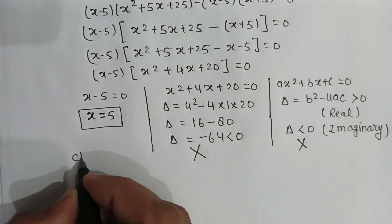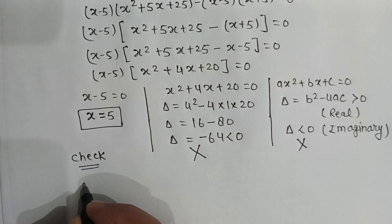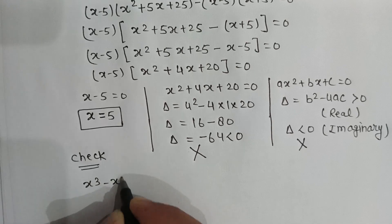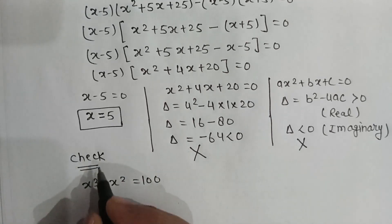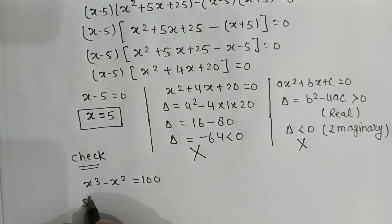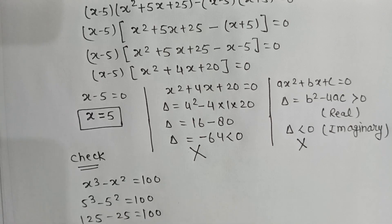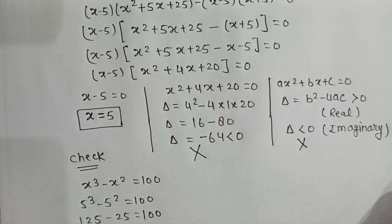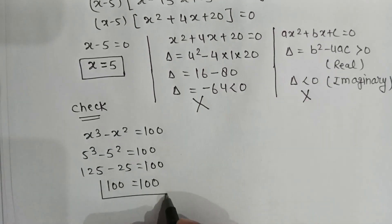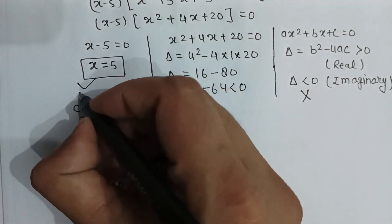Let us check whether this value is correct. We know x cube minus x square equals 100. If we put x equals 5 in this equation, we get 5 cube minus 5 square equals 100, which is 125 minus 25 equals 100. That gives us 100 equals 100, confirming the answer x equals 5 is correct.